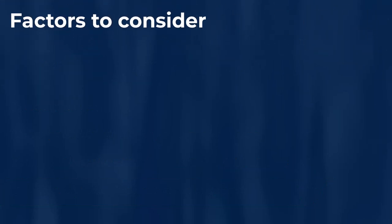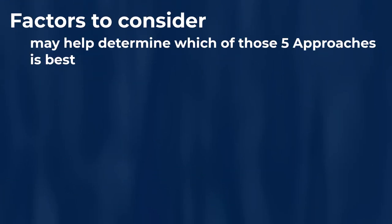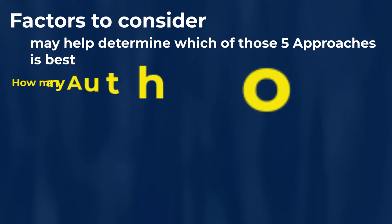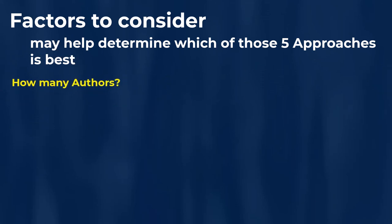Next we're going to look at some factors to consider and understand — factors that will help you determine which of these five different approaches would be the appropriate one to use for your particular situation. The very first factor you should be thinking about is how many authors are there for the particular song or songs that you want to register. An author is the same idea as a creator for the particular song.